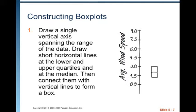Draw short horizontal lines at the lower and upper quartiles and at the median. So, if you were reorienting it where the axis was horizontal, they would be little vertical lines. Then connect them with vertical lines to form a box. Looking at the box on here to the right, that value that is between 1.5 and 3 that has a little line there in the middle, that's the median. And then 3 is the third quartile, and somewhere below 1.5 is the first quartile.